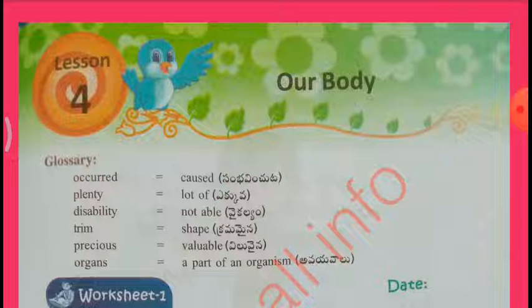Glossary words: Occurred means Caused. Plenty means Lot of. Disability means Not Able. Trim means Shape. Precious means Valuable. Organs means a part of an organism.